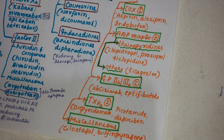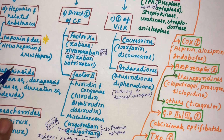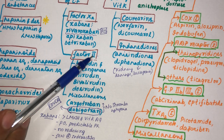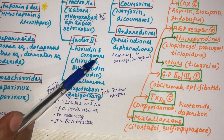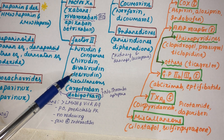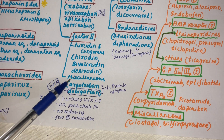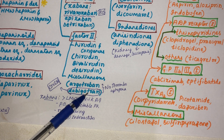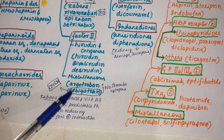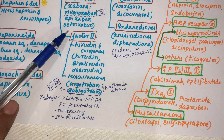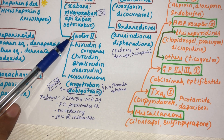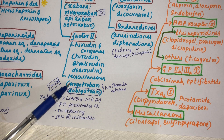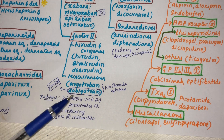Under direct inhibitors of clotting factors, in the miscellaneous category are argatroban and dabigatran. Since they come under direct inhibition of factor 2a, their mechanism of action is inhibiting thrombin.